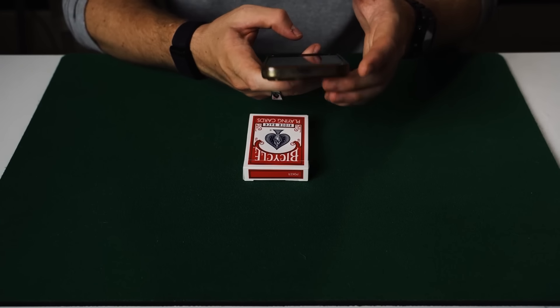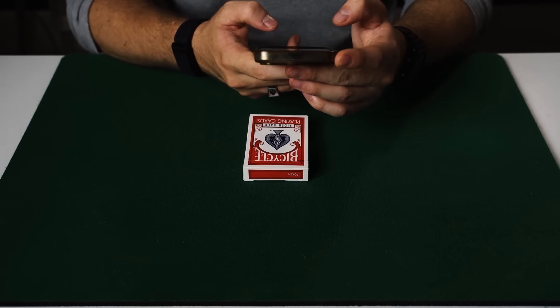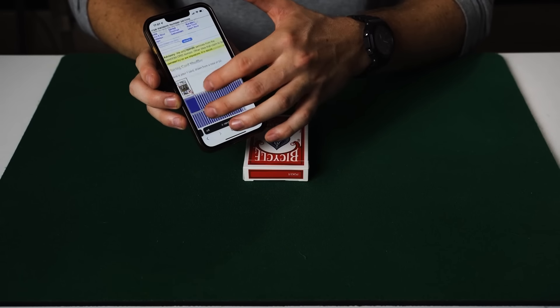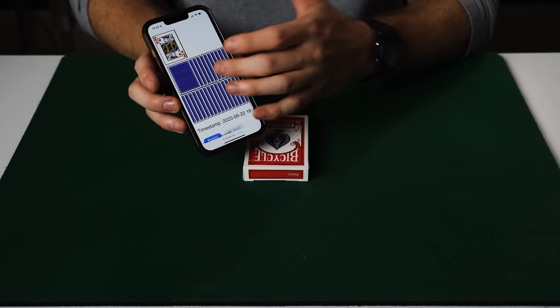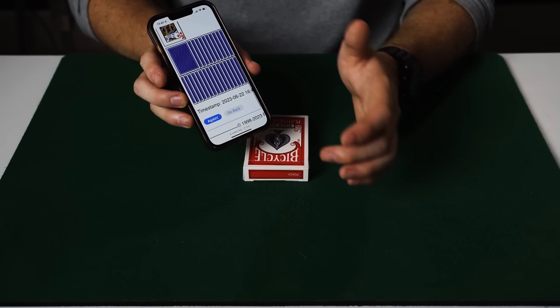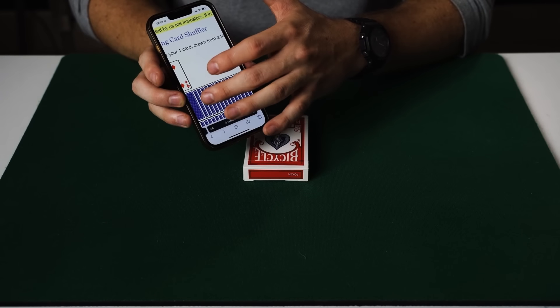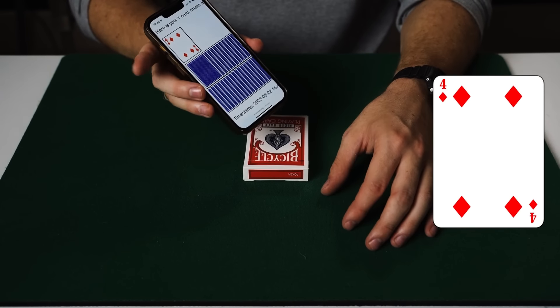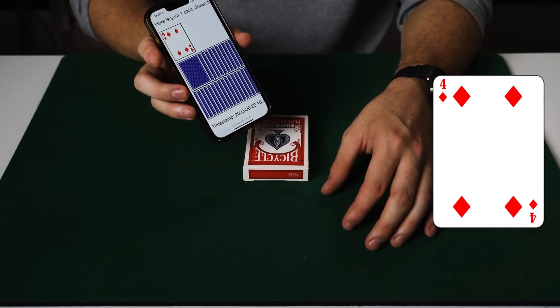Because I don't have a spectator here, I'm just going to randomly generate a card for you now. So we'll generate a new card. In this case, it's the king of diamonds. But let's just say the spectator wanted to change their mind. So we'll generate one more card. And in this case, it's now the four of diamonds. So that's the card that the spectator is thinking of.